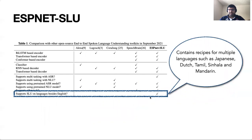The toolkit also contains recipes for languages such as Japanese, Dutch, Tamil, Sinhala, and Mandarin. With these recipes, we want to facilitate research in SLU technologies and ensure that they are available to a wide variety of users, going beyond English-speaking users.